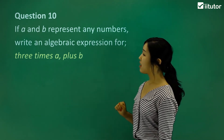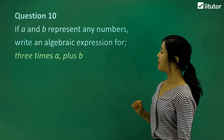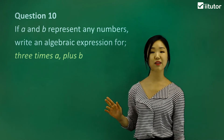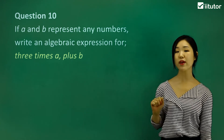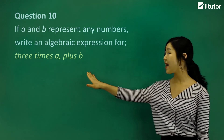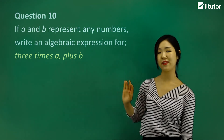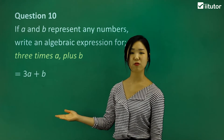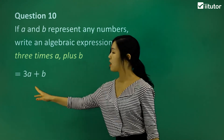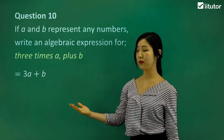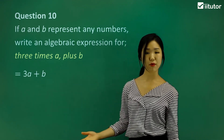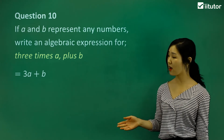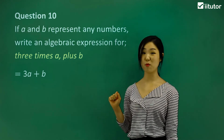Question ten: if a and b represent any numbers, write an algebraic expression for three times a plus b. We're going to have three lots of a's and then add b. Three times a would simply be 3a — you don't have to write three times a, because if there's nothing in between it means multiply. So three times a is 3a, and then plus b, giving us 3a plus b. We can't go any further because that's the simplest form — there are no more like terms.